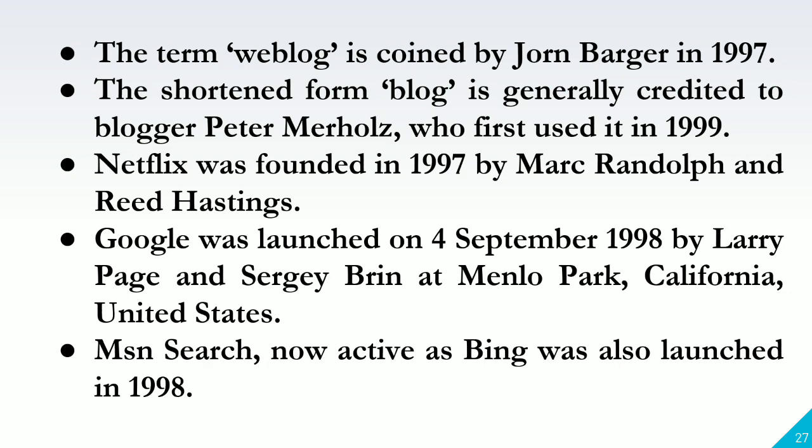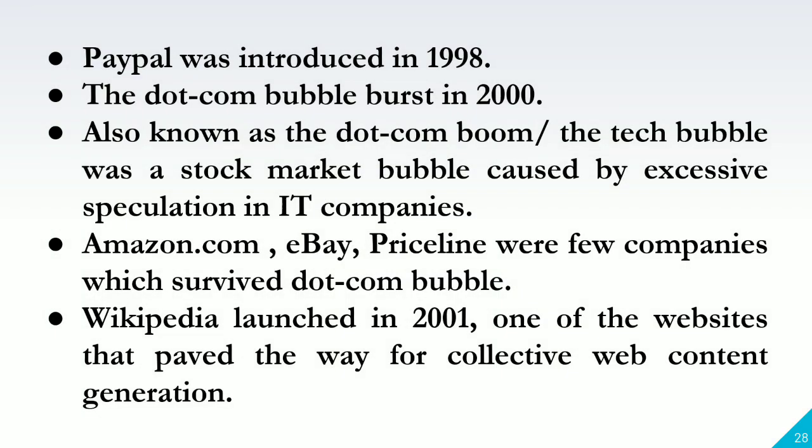In 1999, Napster — an internet-based file sharing software — was launched. Also important was the introduction of PayPal. In 2000, something very important happened — the dot-com bubble burst, also called the dot-com collapse. This resulted in huge losses for legions of investors. Hundreds of companies closed, some of which had never turned a profit for their investors. It was a depression period for the IT world — a tech bubble or stock market bubble caused by excessive speculation in IT companies. Amazon.com, eBay, and Priceline were among the few companies that survived the dot-com bubble.